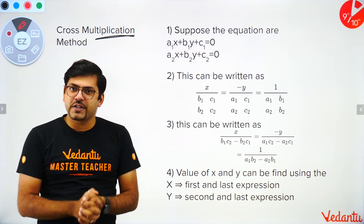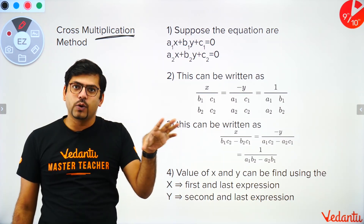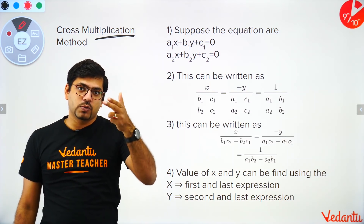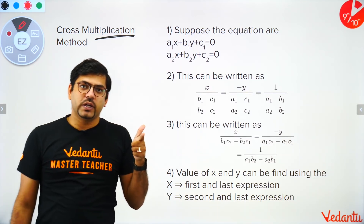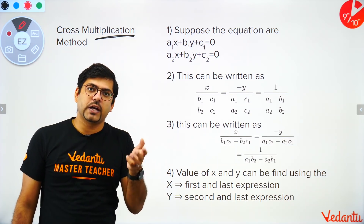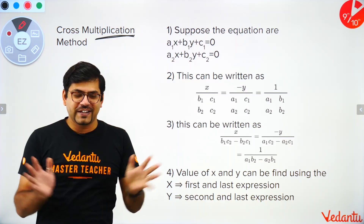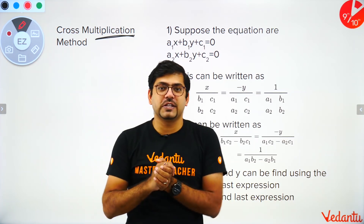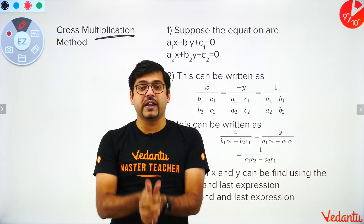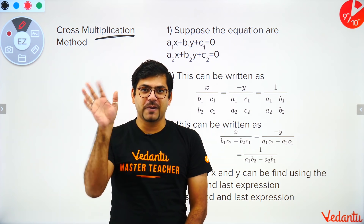That's all for this chapter — only three key parts to remember: first, how to graph linear equations; second, the three conditions for pair of linear equations (a1/a2 = b1/b2 = c1/c2 for coincident, a1/a2 = b1/b2 ≠ c1/c2 for parallel with no solution, and a1/a2 ≠ b1/b2 for unique solution); and third, the three solution methods. See you in the next chapter of the formula cheat sheet. Bye!